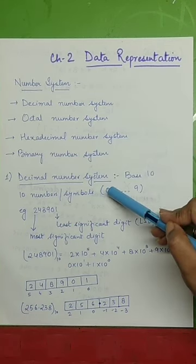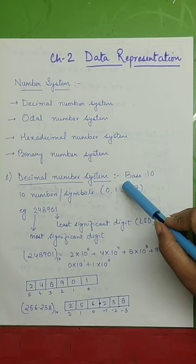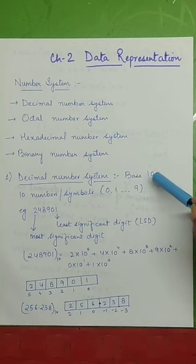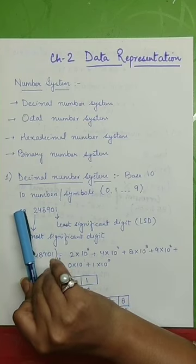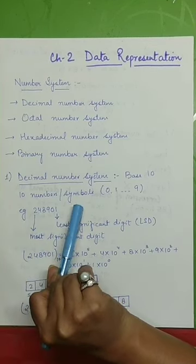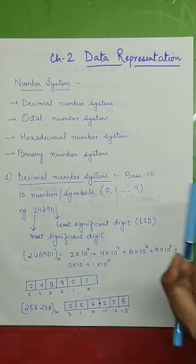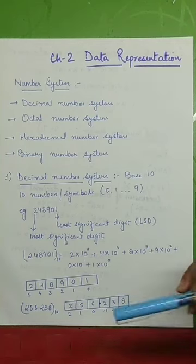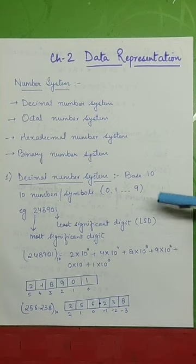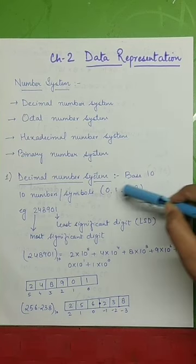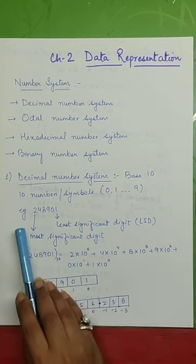First of all, the decimal number system. From our very first class, we have been studying about the decimal number system. This number system has the base 10, which means we have a total of 10 symbols to represent our numbers — 0, 1, 2, 3, and so on till 9. All the numbers that we write are comprised of these symbols only, 0 to 9.